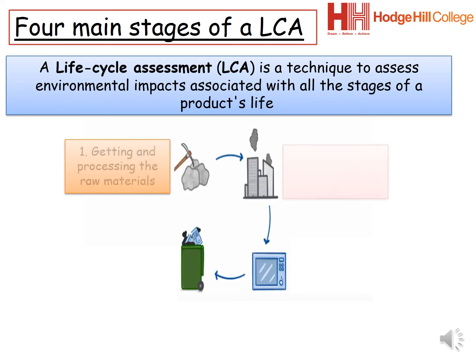The first stage involves getting and processing the raw materials. All the raw materials we need come from the earth's crust, atmosphere, oceans, or from living organisms. Obtaining these materials has an impact on the environment, including using up limited resources such as ores and crude oil, and damaging habitats through quarrying, mining, or felling trees.